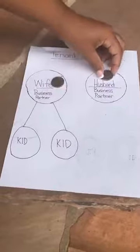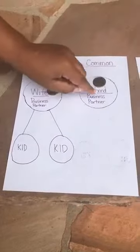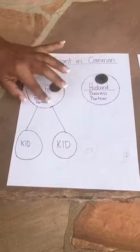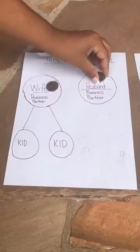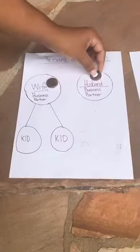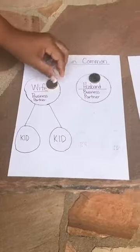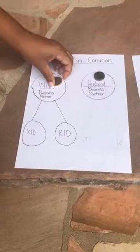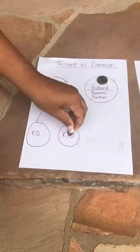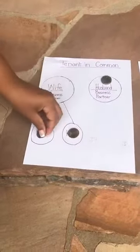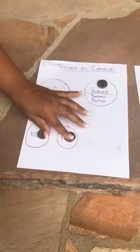If you own a property with another person, you may want to check your deed. This illustration covers tenants in common — say a husband and wife own a property, or you have a business partner. You each own 50%, represented here by the quarters. If the husband or the business partner dies and they have two children, those children each own 25% of the property.